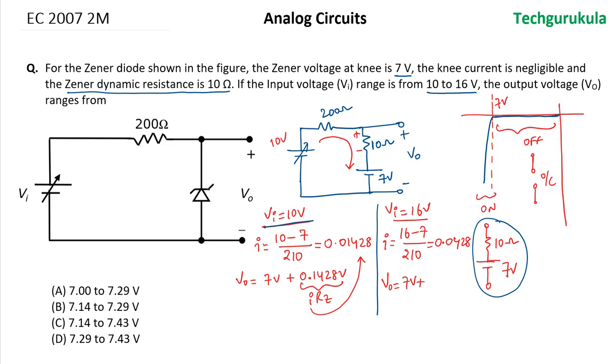So we can write the voltage corresponding to input voltage of 16 volts is 7.43 volts approximately, and for 10 volts this is 7.14 volts.